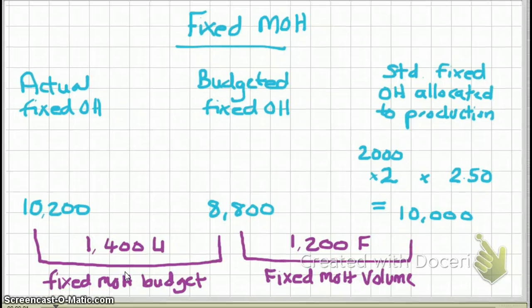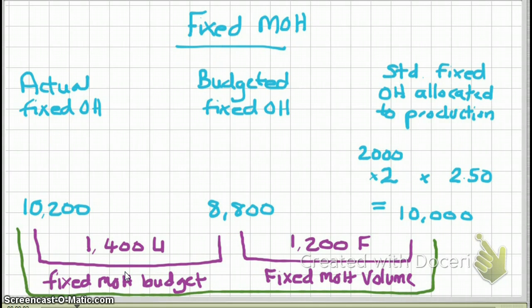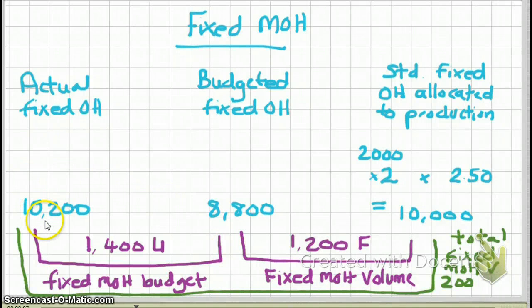Remember, the total of the fixed overhead budget variance and the fixed overhead volume variance does not equal the flexible budget variance. The total fixed manufacturing overhead variance is $200 — the difference between actual fixed overhead of $10,200 and standard allocated fixed overhead of $10,000. Going from right to left, we expected $10,000 but ended up with $10,200, so it is an unfavorable variance.